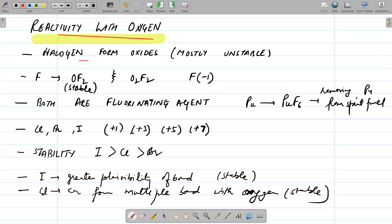Now, halogen form oxides. Mostly, these oxides are unstable. First, we will do for fluorine. Fluorine is forming two oxides, OF2 and O2F2, where fluorine has oxidation state of minus 1. And OF2 is the stable out of these two. And both are fluorinating agents. They will react with plutonium to form plutonium F6. That is, they fluorinate plutonium and they help in removing plutonium from spent fuel.